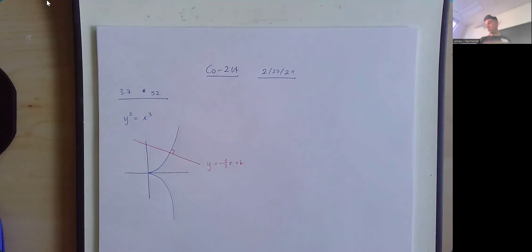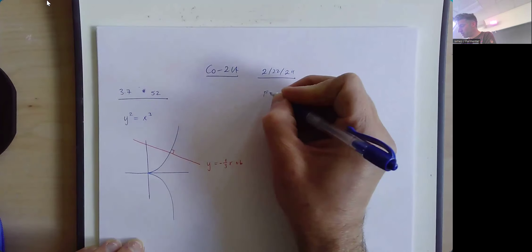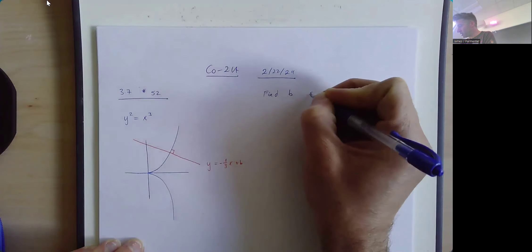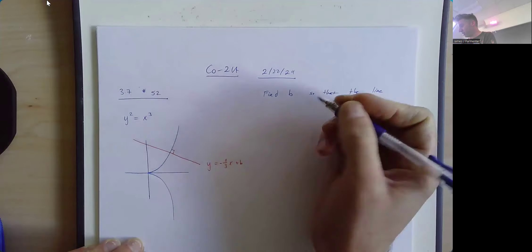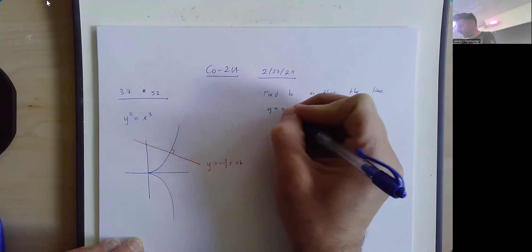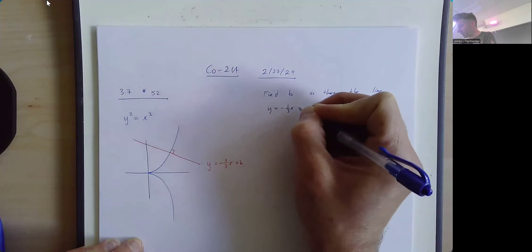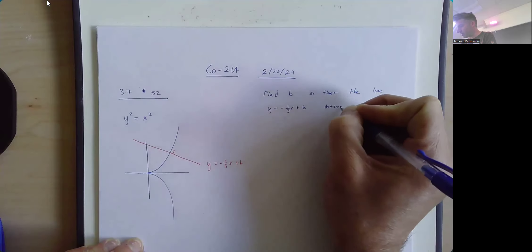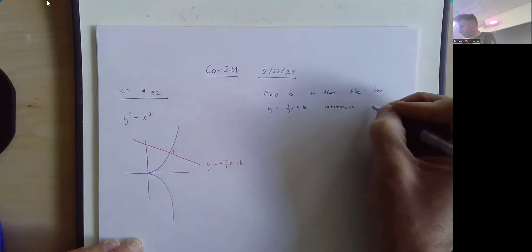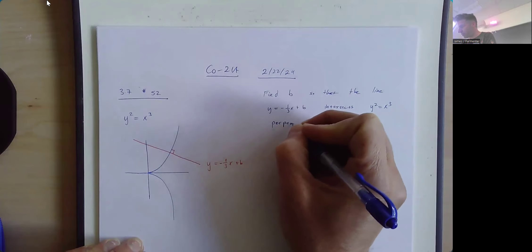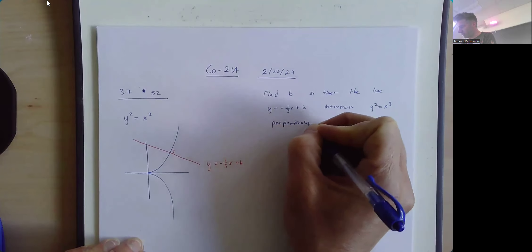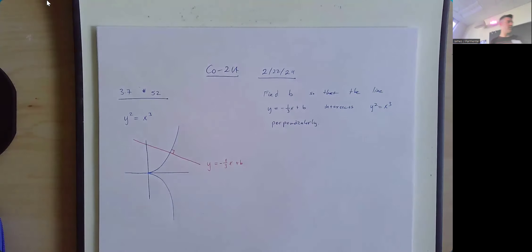We want to find b so that the line y equal to negative 1/3 x plus b intersects the equation y squared equal to x cubed perpendicularly or orthogonally. Orthogonal, perpendicular, right angle — they all mean the same thing.